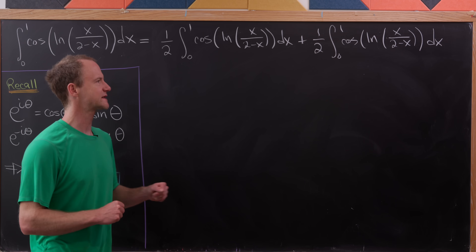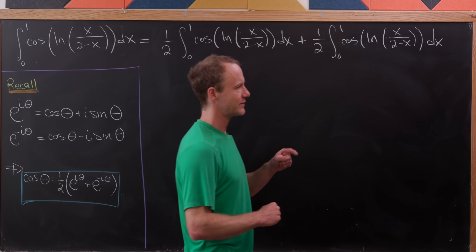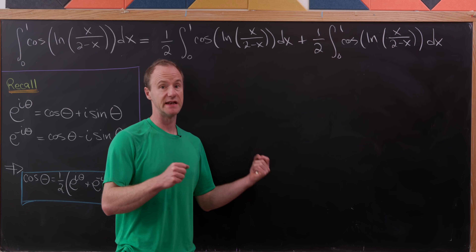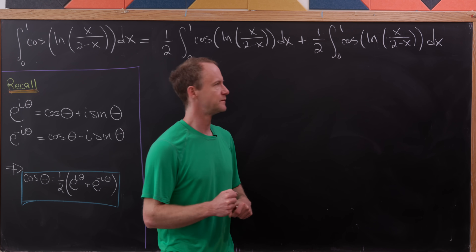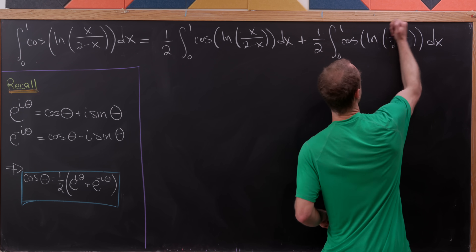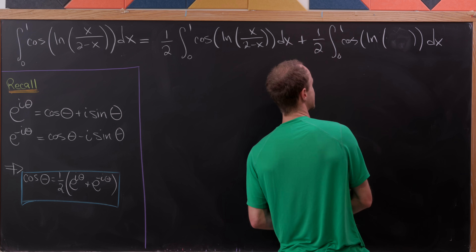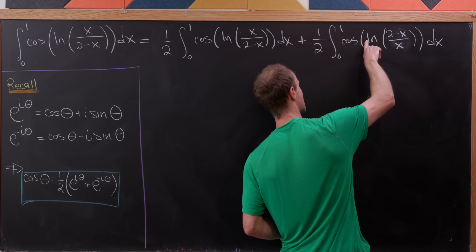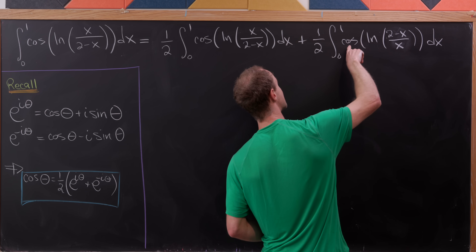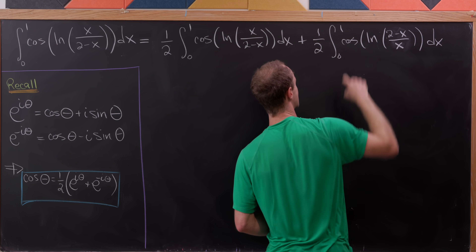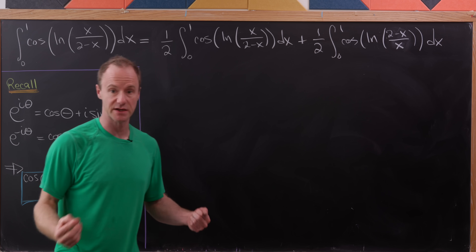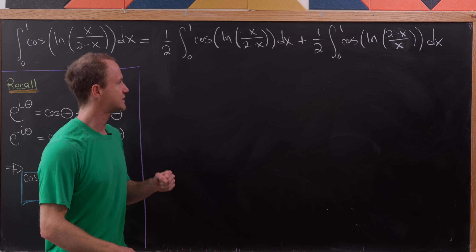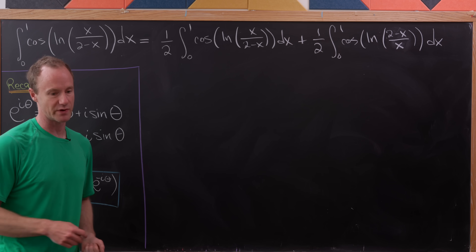I'm going to use the fact that the natural log of the reciprocal of something is negative the natural log of what we started with. So I can replace x over (2 minus x) with (2 minus x) over x — that picks up a minus sign — but because cosine is an even function, this minus sign can disappear since cosine of theta equals cosine of negative theta. That's our tricky step.